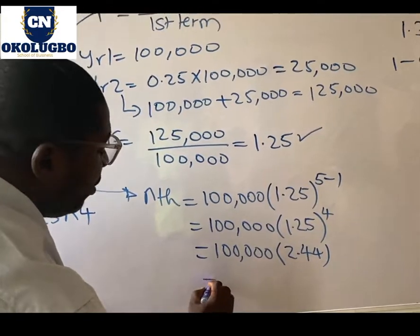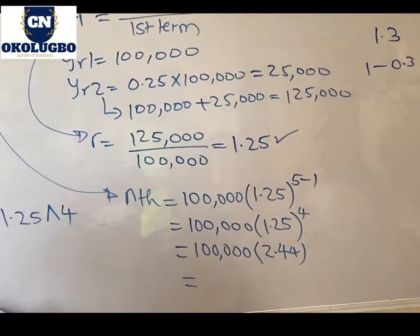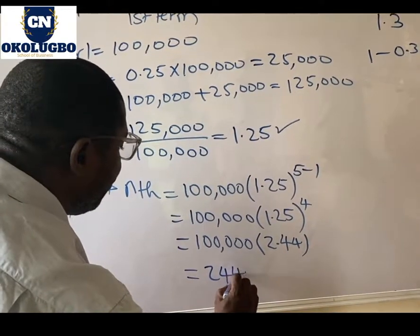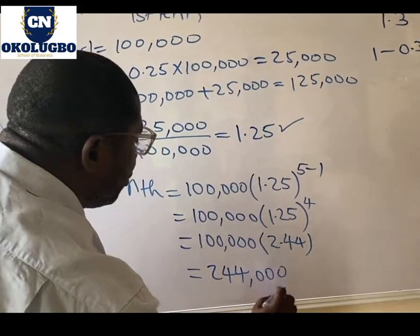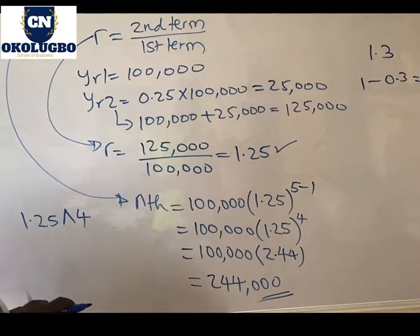So the value of the land, 100,000 times 2.44, what would that give you? That will give you 244,000. So this is the value of the land by the fifth year.